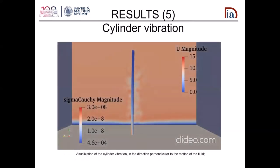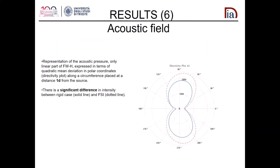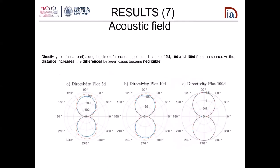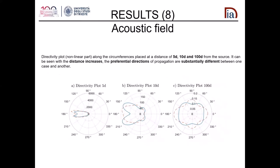A video shows the displacement of the body in the direction perpendicular to the motion. We then studied the acoustic field — specifically the directivity of the acoustic pressure, which is the root mean square of pressure in cylindrical coordinates. In the near field at one diameter, the intensity in the elastic case is higher than the rigid one, due to the thickness term — the only linear part of the Ffowcs Williams–Hawkings equation. As distance increases, this difference becomes negligible. Looking at the nonlinear part, the preferential direction of acoustic pressure propagation differs, meaning the turbulent wake is quite different between the rigid and elastic cases.